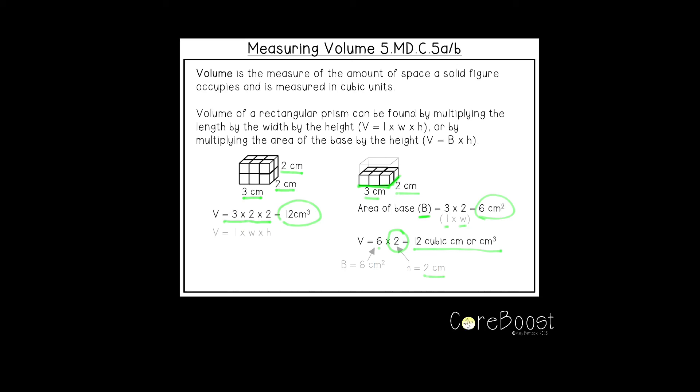So really taking area of the base times the height is the same as length times width times height, because these two pieces over here, length times width, is your base area. When you do length times width, you're finding the area of your base, and then you're multiplying it by the height.